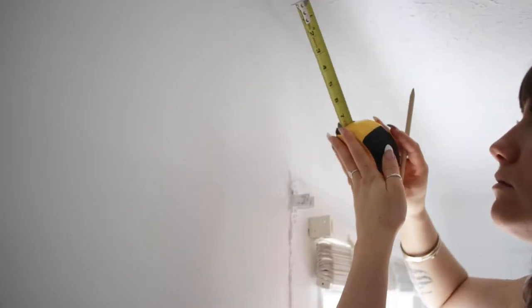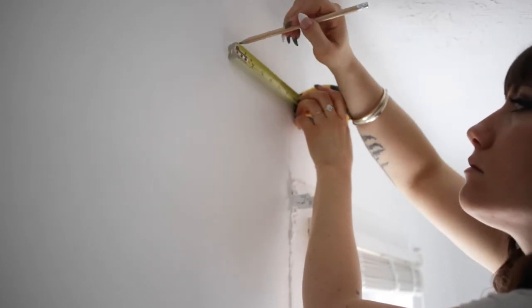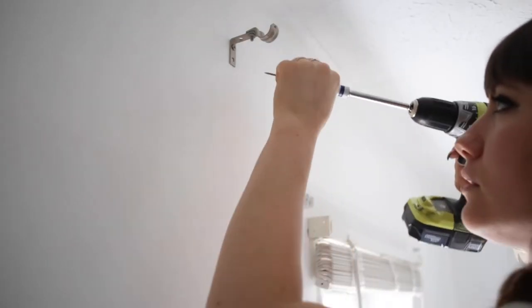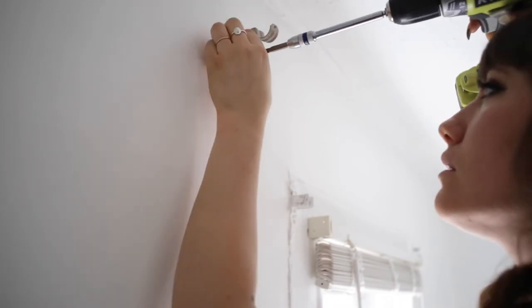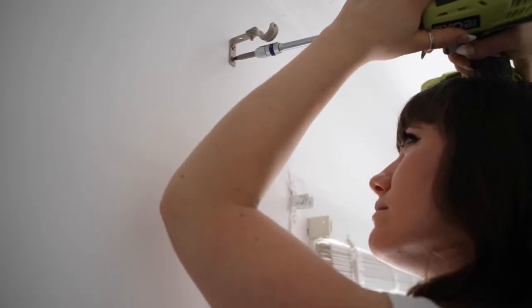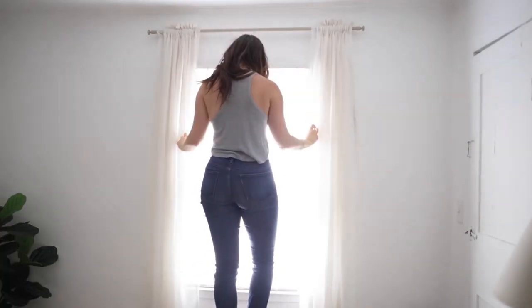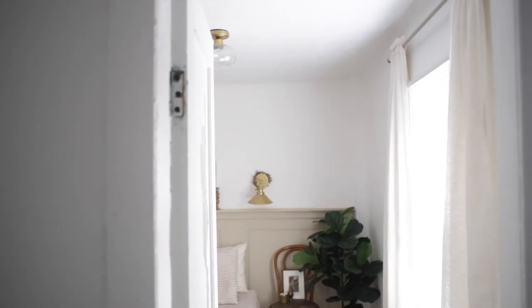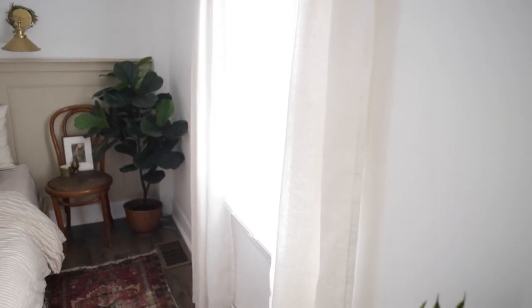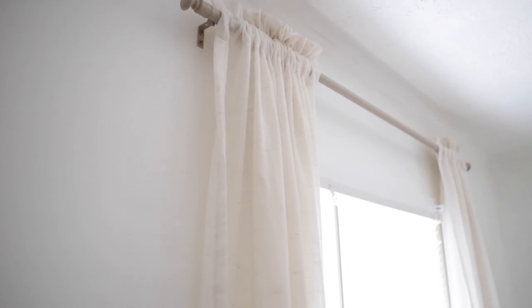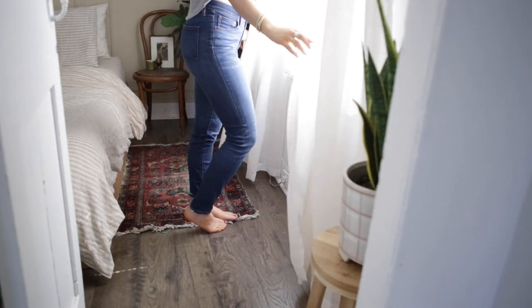I marked out where I want my brackets to go, measuring 5 inches higher and 5 inches wider than the windows. Then I just screwed them in place and hung my curtain.